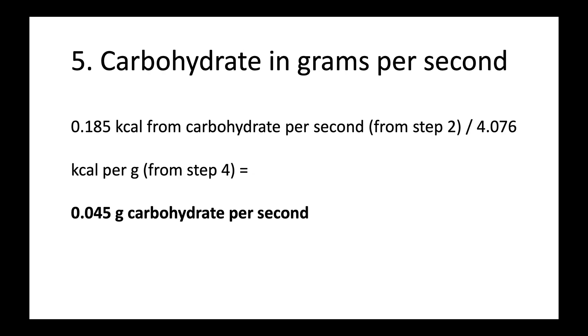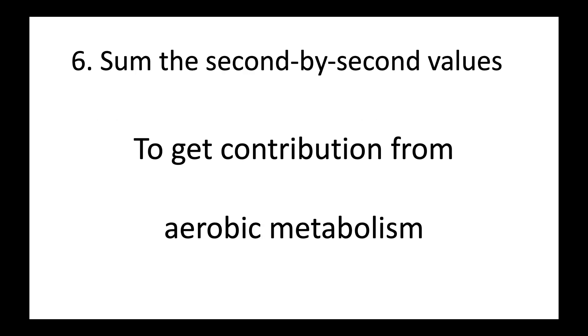And then we want to convert that to grams per second. So we take the 0.185 calories from carbohydrate from step two, divide it by the yield, and that gets us 0.045 grams of carbohydrate per second. Finally, we sum the second-by-second values to get a total contribution from aerobic metabolism for the entire exercise session.